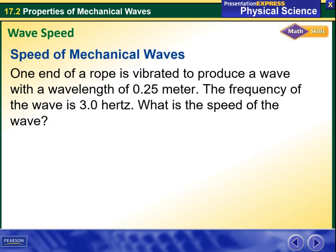Speed of mechanical waves. One end of a rope is vibrated to produce a wave with a wavelength of 0.25 meters. The frequency of the wave is 3 hertz. What is the speed of the wave?